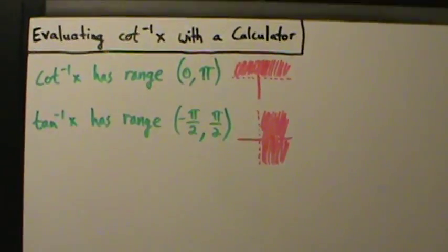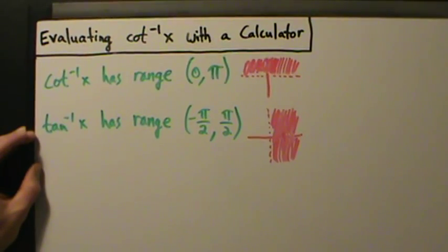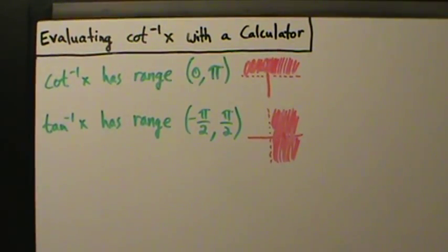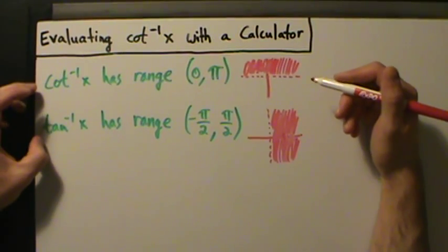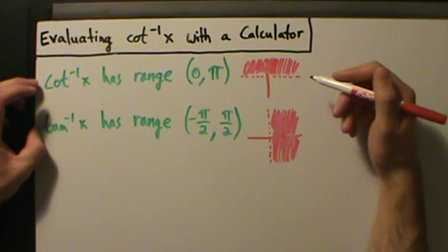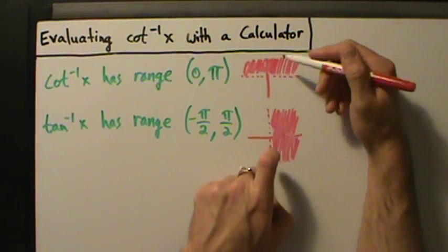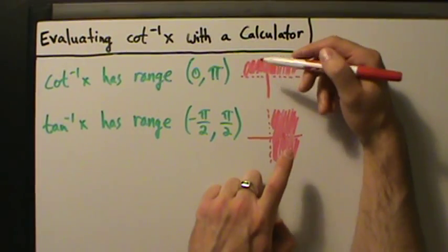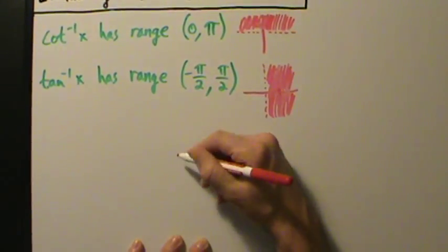If you saw the previous two videos, you may notice something's a little bit different here. When we did inverse secant with inverse cosine, they were both in quadrant 1 or quadrant 2. When we did inverse cosecant with inverse sine, they were both in quadrant 1 or both in quadrant 4. Here's the problem with inverse cotangent and inverse tangent: they're either both in quadrant 1, or inverse cotangent is in quadrant 2 while inverse tangent is in quadrant 4. That's actually going to complicate things.